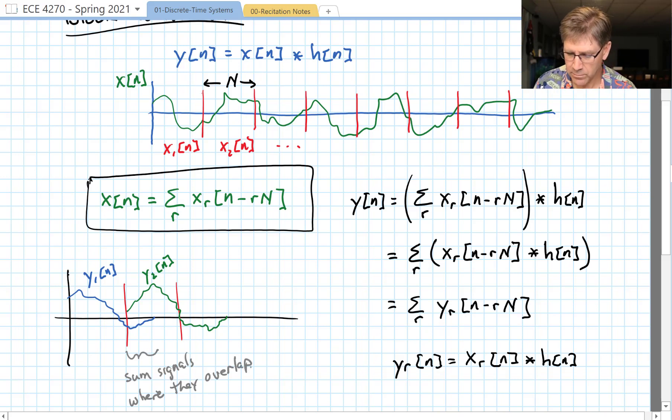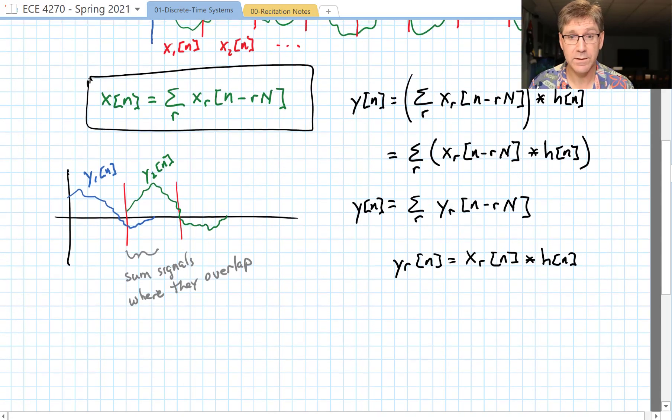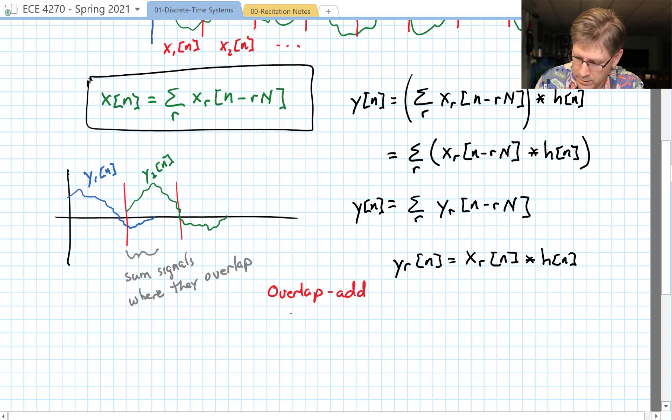Overlap, so we'll sum those where they overlap. And when we're all done we will get y[n] is equal to the sum of each of the individual convolution outputs. And yeah, that works, that's about it. We call this method the overlap add method.